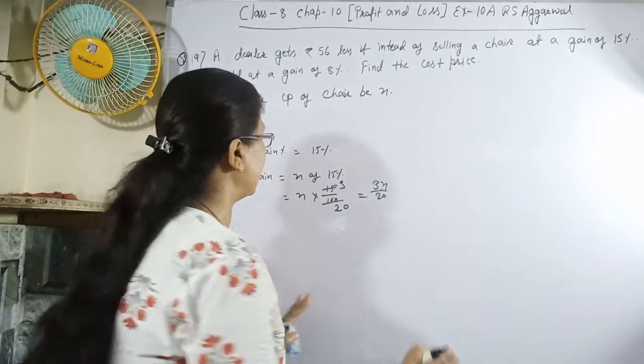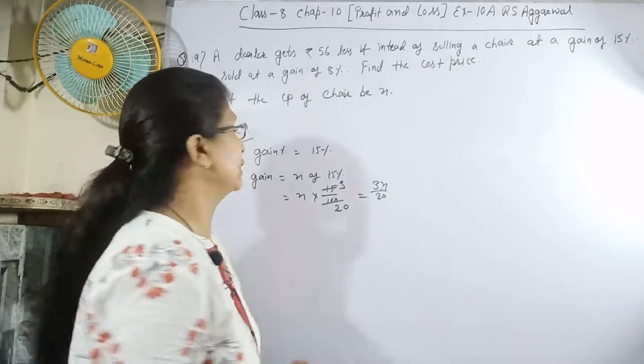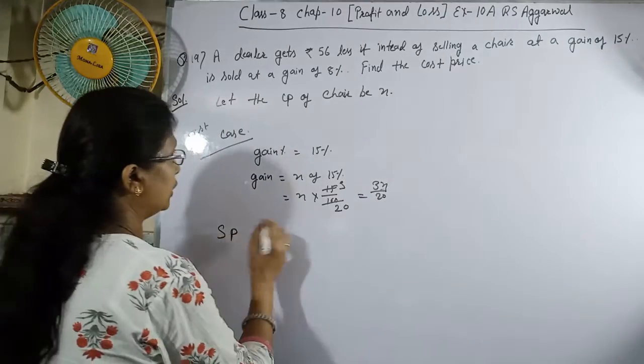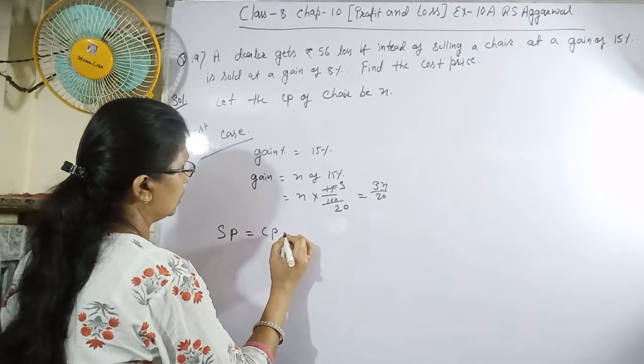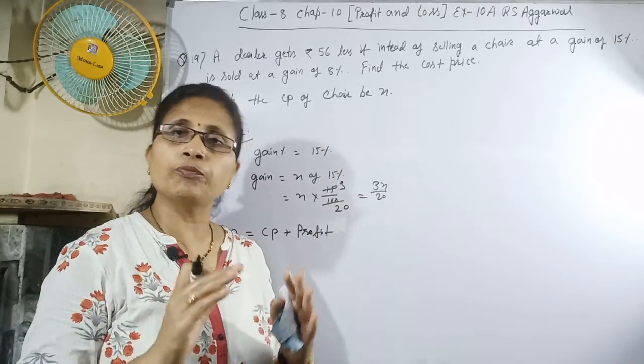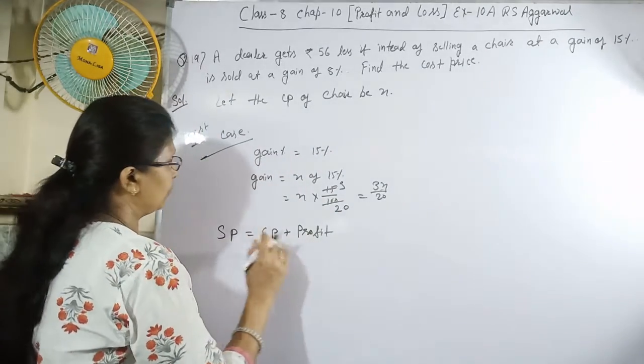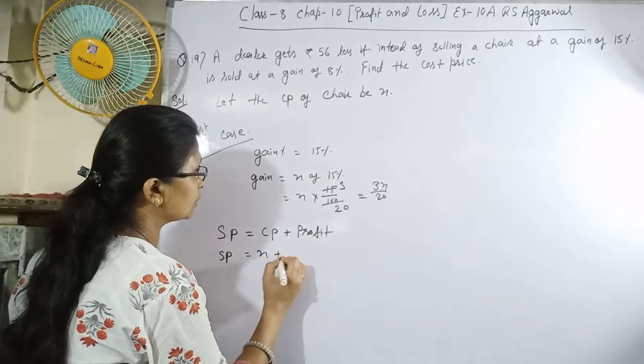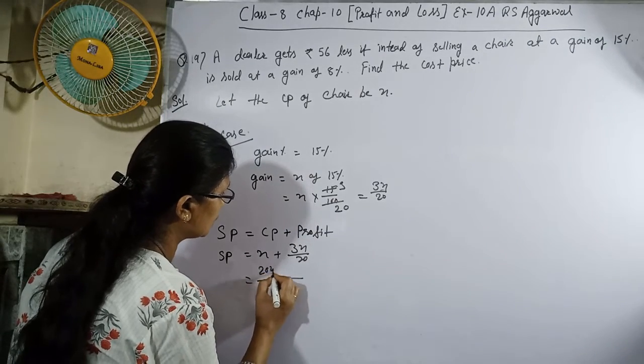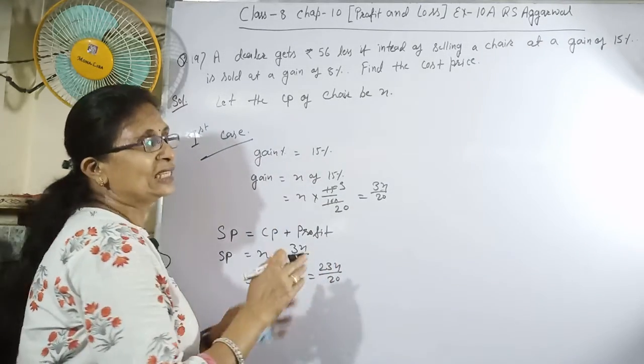If they sell at 15% gain, we need to find the SP. SP equals CP plus profit. Both cases have profit, so SP equals x plus 3x upon 20, which is 20x plus 3x upon 20, equals 23x upon 20. This is the SP according to the first case.